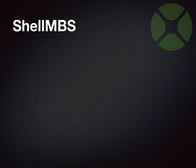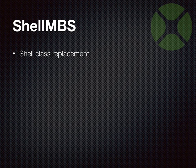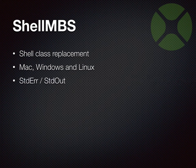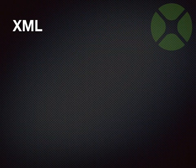We got Shell MBS — eventually there was a need for a replacement for the built-in Xojo Shell. We got one for Windows and Linux. It provides you, for example, the data for standard error and standard output separately, because some people need that. You can also send data to standard input, so you can pass data to the process and get the output back.